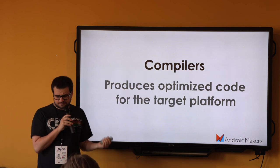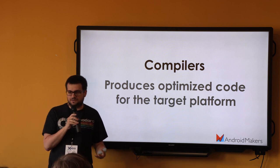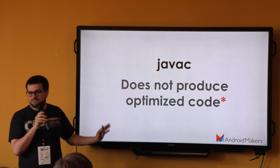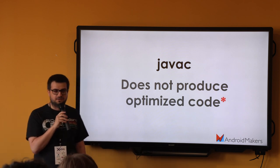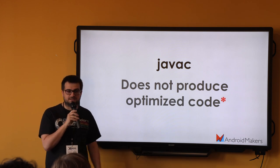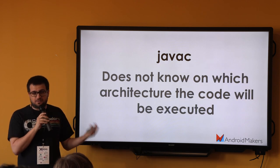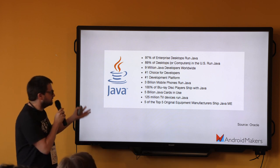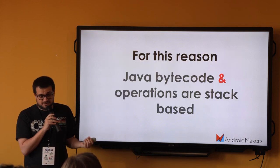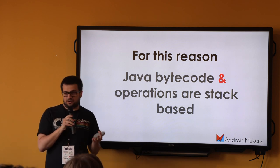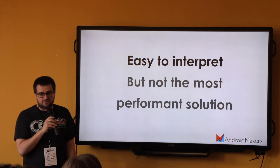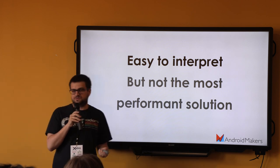What's the difference between Java C and other compilers? Regular compilers produce optimized code for the target platform — they know where they're compiling to. Java C doesn't actually produce optimized code. There was a dash-O option on some versions of Java to optimize, but now the option doesn't do anything. Java C doesn't know where it will be run — it runs on three billion mobile phones, five billion Java cards, TVs, Blu-ray, and everything. For this reason, Java is just bytecode — very simple, all operations are stack-based. It's very easy to interpret, but not the most performant solution.